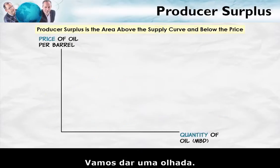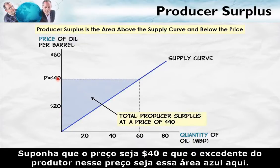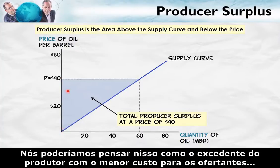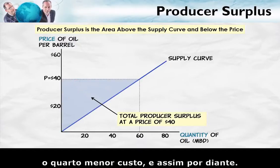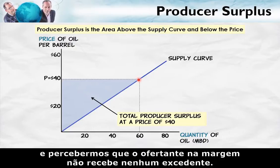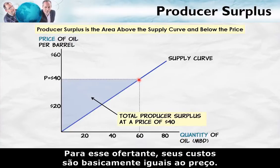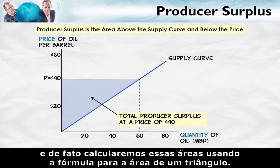Producer surplus is the area above the supply curve and below the price. Suppose the price is $40 — the producer surplus at that price is this blue area right here. We can think about this as the producer surplus of the lowest cost suppliers, plus the second lowest, plus the third lowest, the fourth lowest, and so forth, until we get to the marginal supplier. Notice that the supplier on the margin earns no producer surplus at all — their costs are just basically equal to the price. As with consumer surplus, we can calculate these areas using our formula for the area of a triangle.